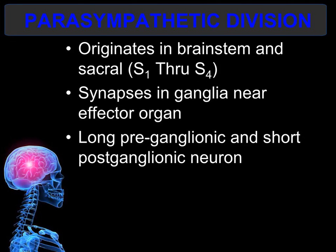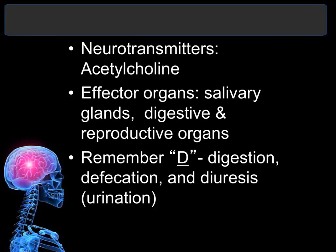The parasympathetic division originates in the brain stem and then has a gap, followed by a sacral portion from the first to the fourth sacral level. The synapse or ganglia is near the effector organ, so it has a long preganglionic neuron and a short postganglionic neuron. The neurotransmitter involved is acetylcholine, which is the same one used by the somatic motor neuron. The effector organs are the salivary glands, digestive organs, and reproductive organs.